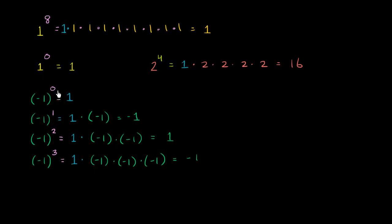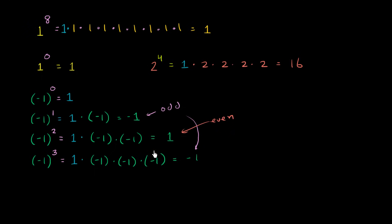So you see the pattern: negative 1 to the 0 power is 1, to the first power is negative 1, then multiply by negative 1 again to get positive 1, then negative 1 again. If you take negative 1 to an odd power, you get negative 1. If you take it to an even power, you get positive 1 — because a negative times a negative is positive, and you'll always have an even number of negatives pairing up.